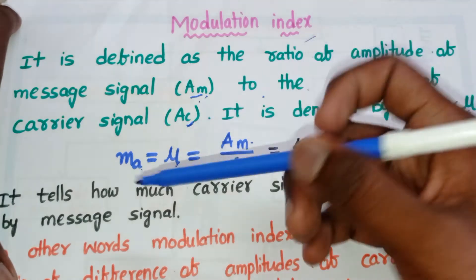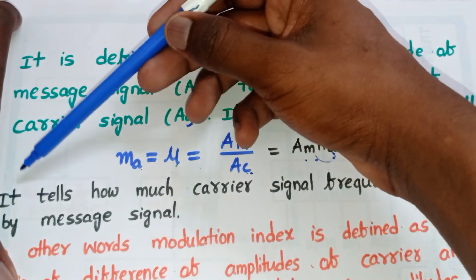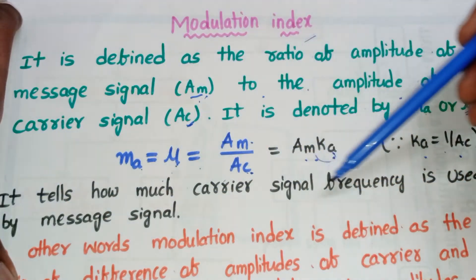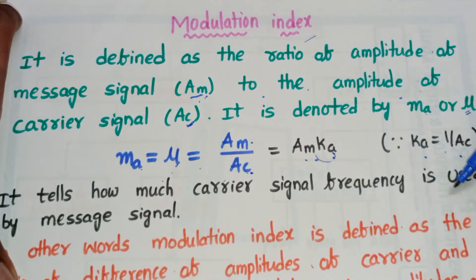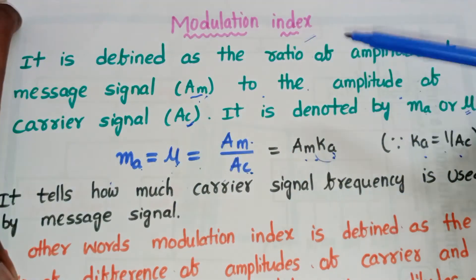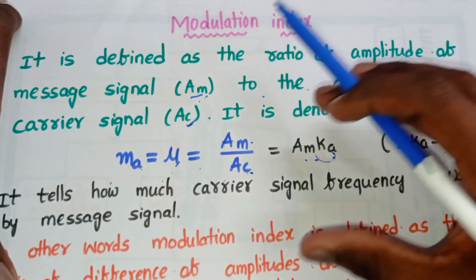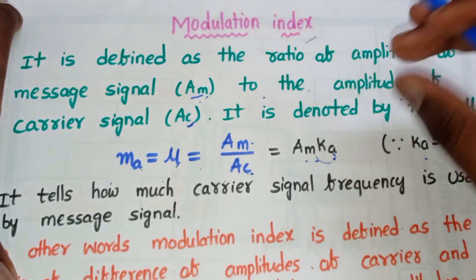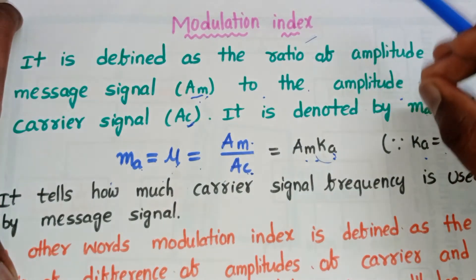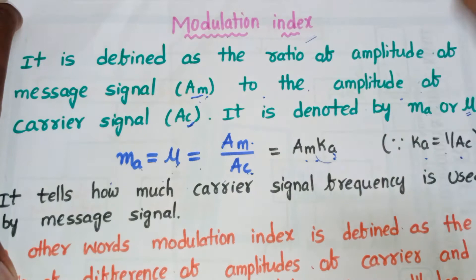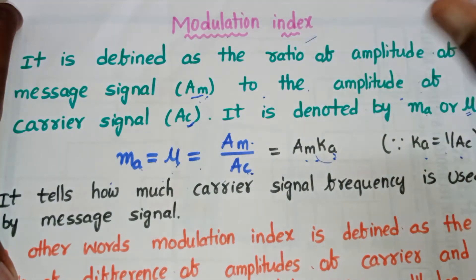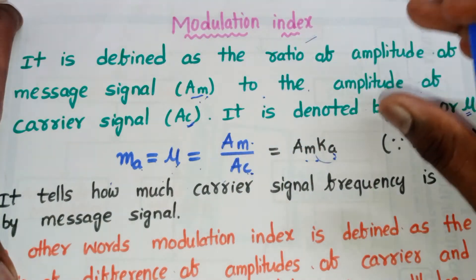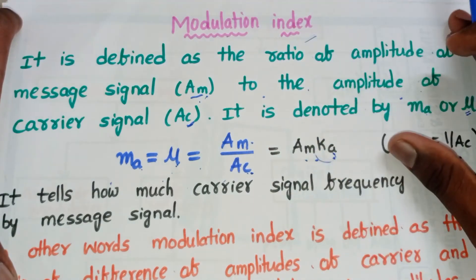The modulation index tells us how much of the carrier signal frequency is used by the message signal — that is, how much carrier signal frequency is used in order to do modulation or to transmit our signal.